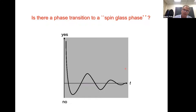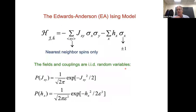Mostly due to both experimental results and numerical simulations, we are pretty well convinced that there is indeed a phase transition in three dimensions. But what the nature of that phase transition is, we don't know. The main experimental features of spin glass are: the cusp in the susceptibility, the smooth behavior of the specific heat, and some interesting non-equilibrium behavior such as aging that also characterizes the spin glass phase.